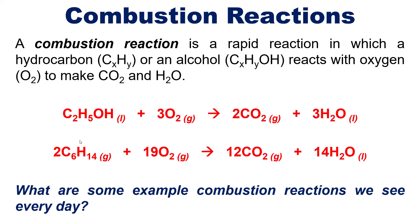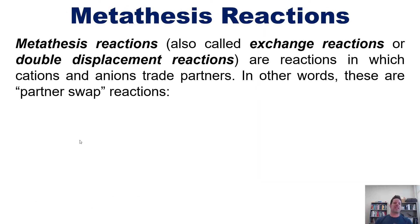The last type we'll discuss is metathesis reactions. Metathesis reactions, which are also called exchange reactions or double displacement reactions, are reactions in which cations and anions trade partners. In other words, these are partner swap reactions. For example, let's suppose you have a generic reaction where A and B both represent different metal cations, whereas X and Y represent different non-metal anions or polyatomic anions.